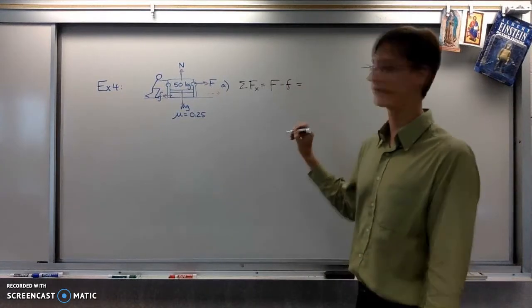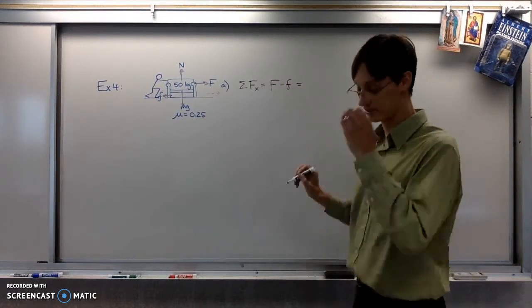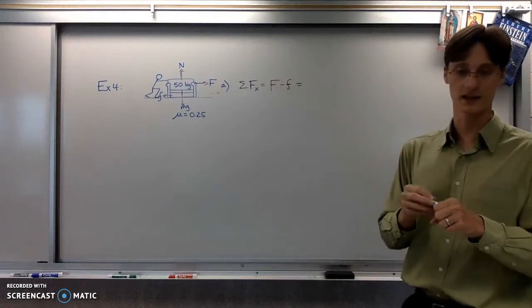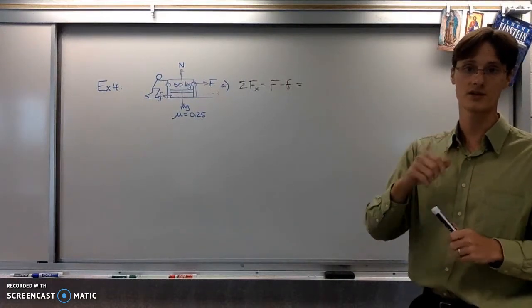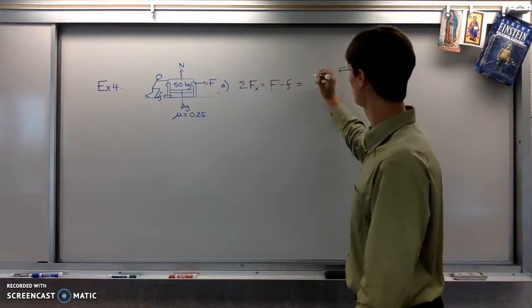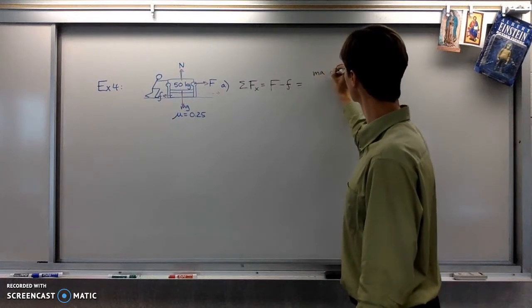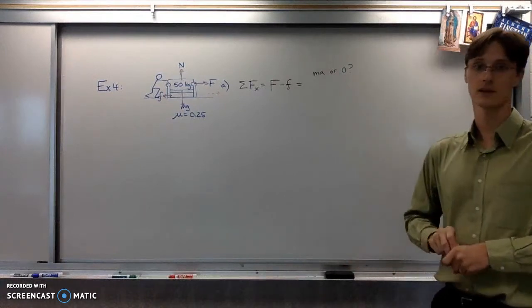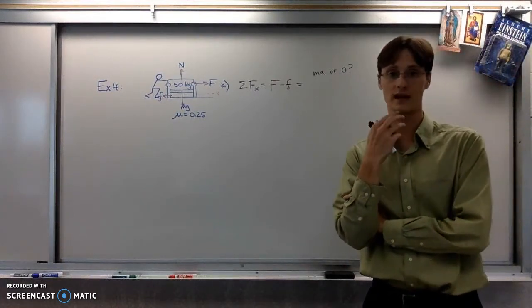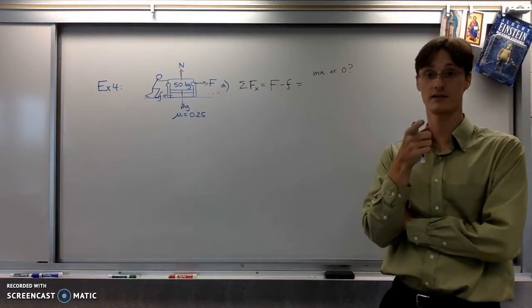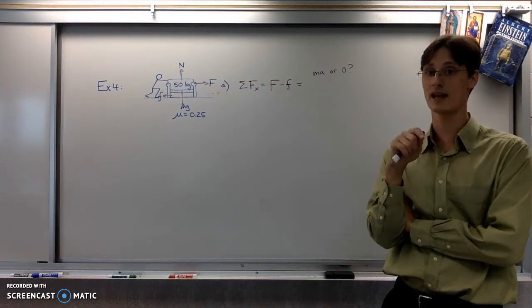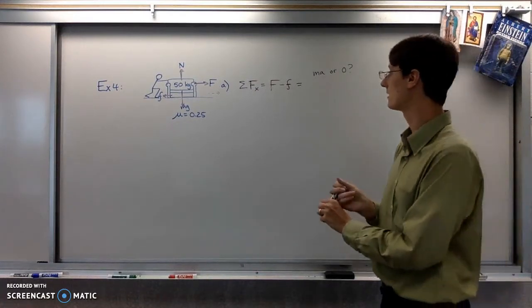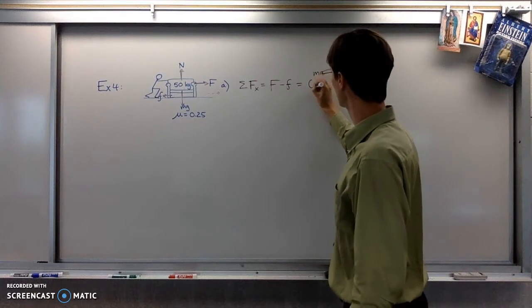So f minus little f for friction equals what? And we said there's two possibilities. It could be ma or it could be zero. Which one do we want? Well, if you were to rewind a minute or two, you would see that I said, if it says minimum or maximum, you're probably going to be setting it equal to zero.